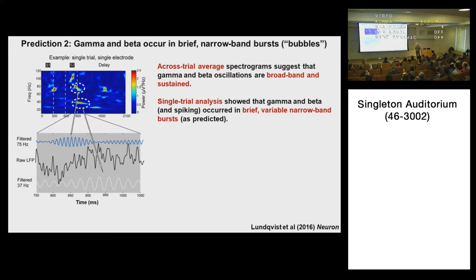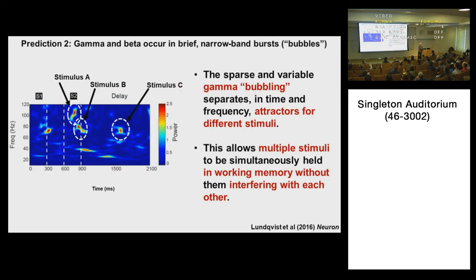The model explains this by the fact that these gamma bubbles — what we call gamma and beta brief events — separate in time and frequency the attractors for the different stimuli. Each gamma burst is associated with a different ensemble being activated for the different stimuli the animal is holding in working memory. This allows you to hold multiple items in working memory without the activation of their ensembles smashing together due to simultaneous activation and distorting them. The time and frequency separation keeps the activation of the ensembles from interfering with one another.